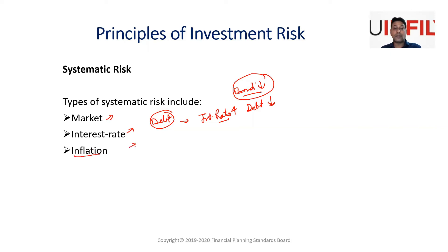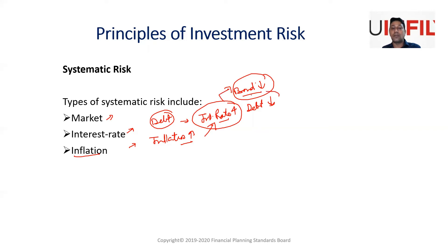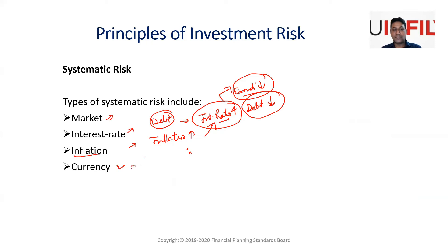Inflation is closely correlated with interest rate risk. When inflation is high in the country, the RBI increases interest rates to suck liquidity from the system. As a result, bond prices go down and your debt portfolio takes a hit. So inflation and interest rate risk are both systematic risks that an individual investor cannot reduce.